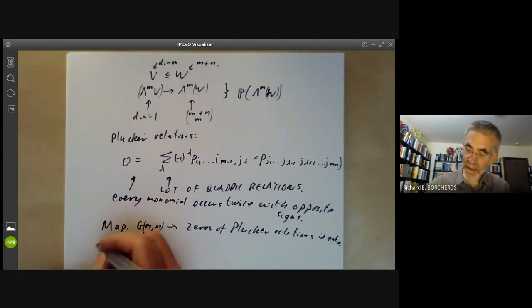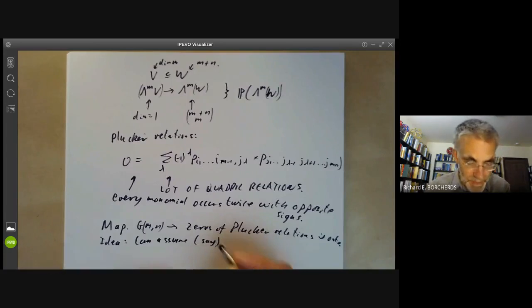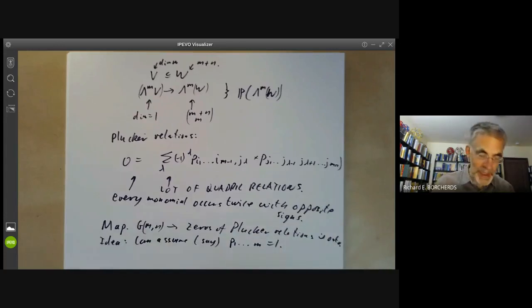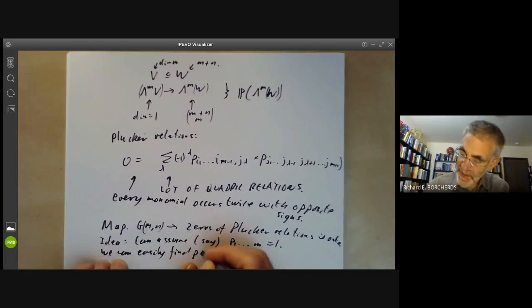The idea is we can assume, let's say, P_{1 to m} is equal to one by changing coordinates if necessary. Then we can find a point of the Grassmannian.